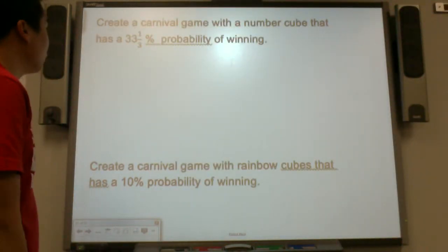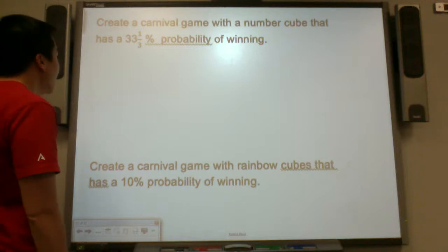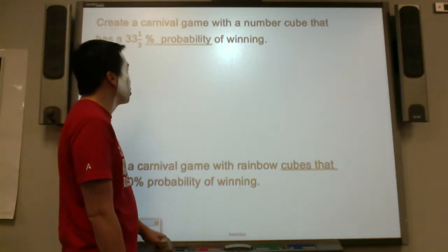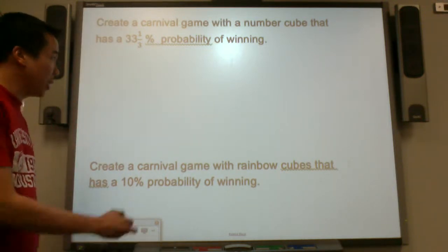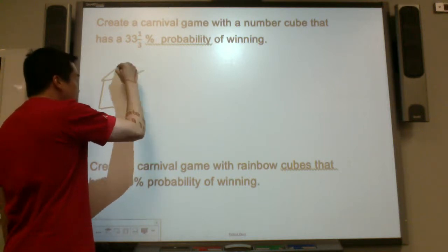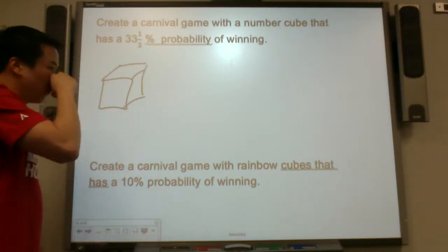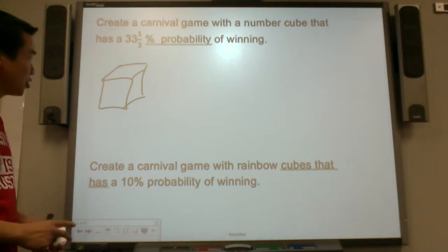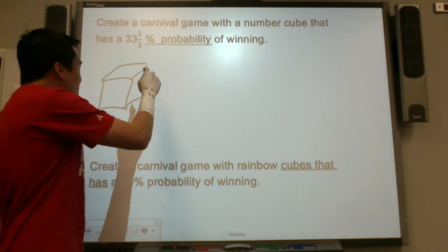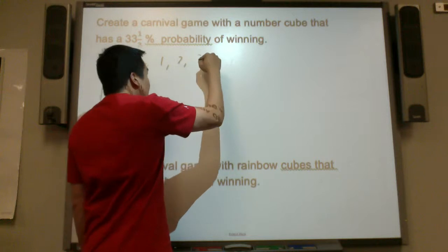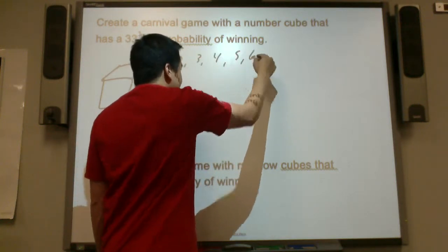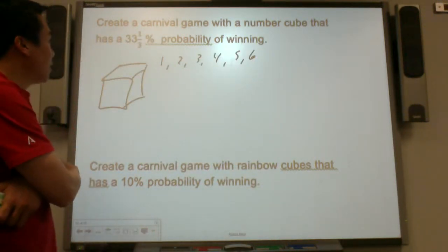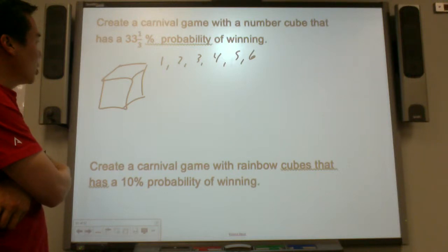Can you create a carnival game with a number cube that has a 33 and one third percent probability of winning? So I have a number cube. You will win 33 and one third percent. Let's think. A number cube goes from one through six. So what can I use? What would give a 33 and one third percent chance of winning?